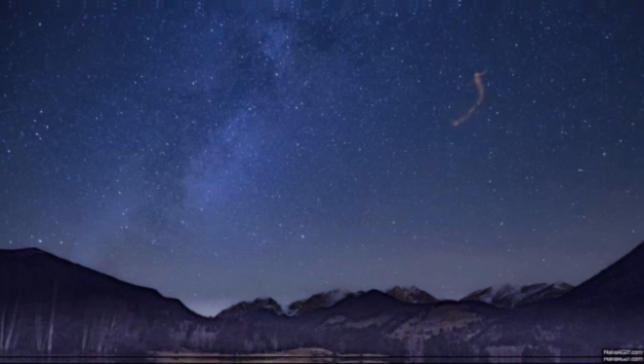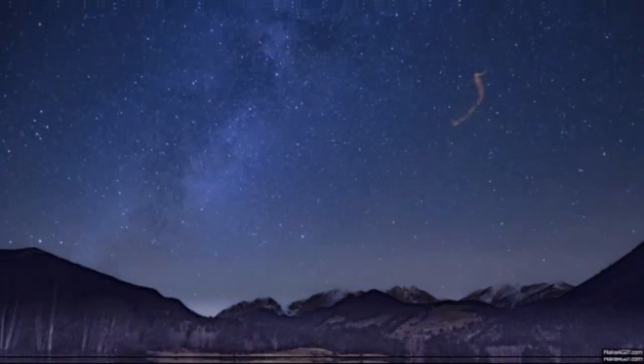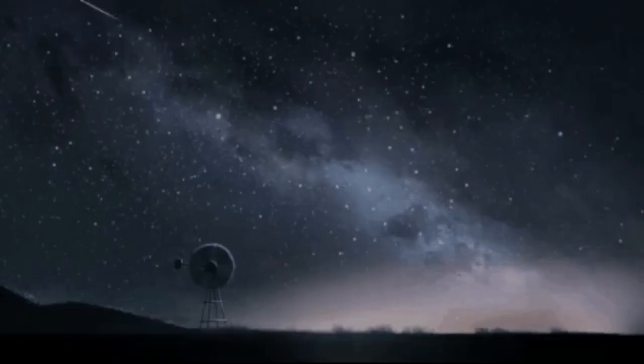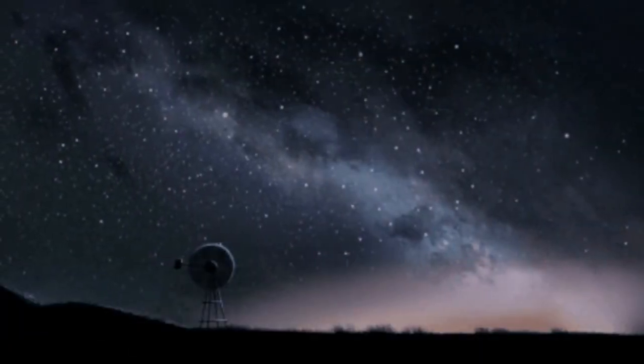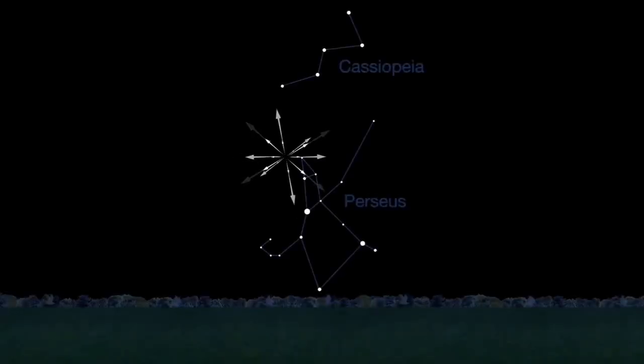When the Earth encounters these meteoroid streams, they form meteors in our night sky. We can see them appearing as if they are coming from one direction, all of them. This focal point, or radiant, in this case is located between the Perseus and Cassiopeia constellations.